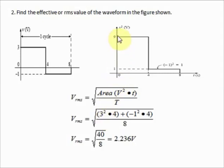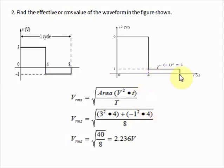In the converted diagram, the squared voltage of 9 volts (from 3²) lasts for 4 seconds, and the squared voltage of 1 volt (from (−1)²) lasts for 4 seconds — giving a total period of 8 seconds. That is the RMS calculation for a square wave using the area method. I hope you learned a lot. See you again for another tutorial — don't forget to like and subscribe!